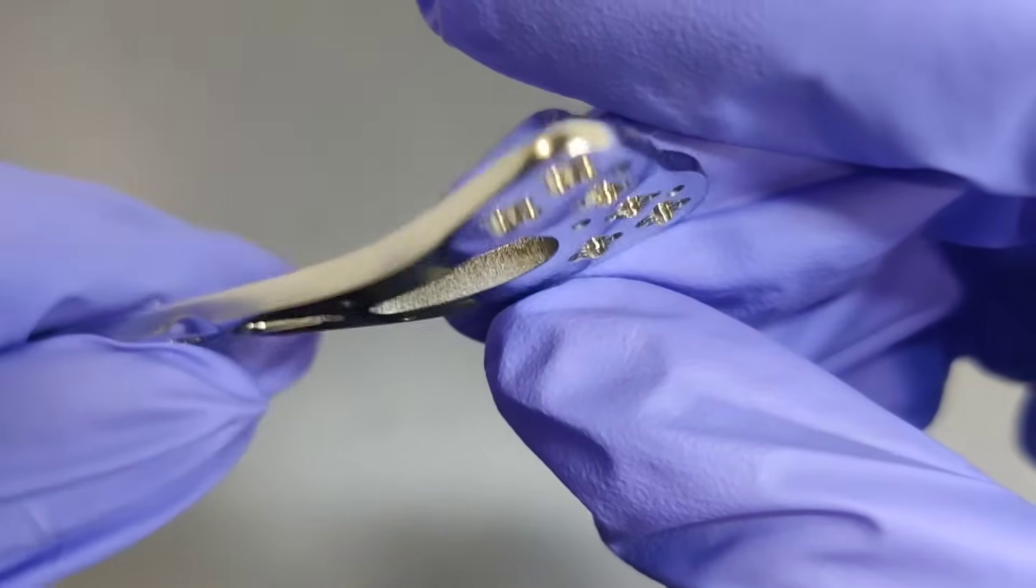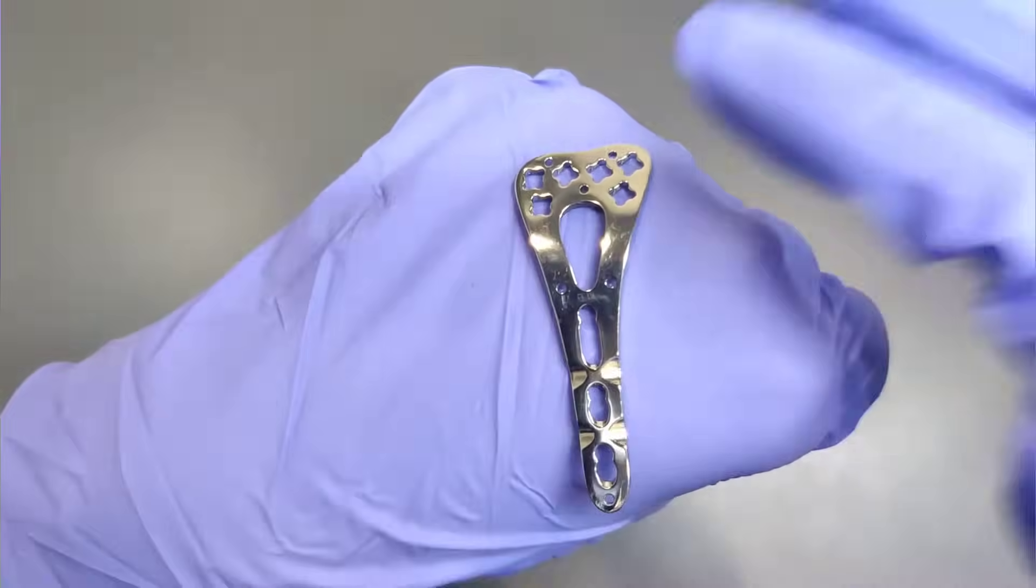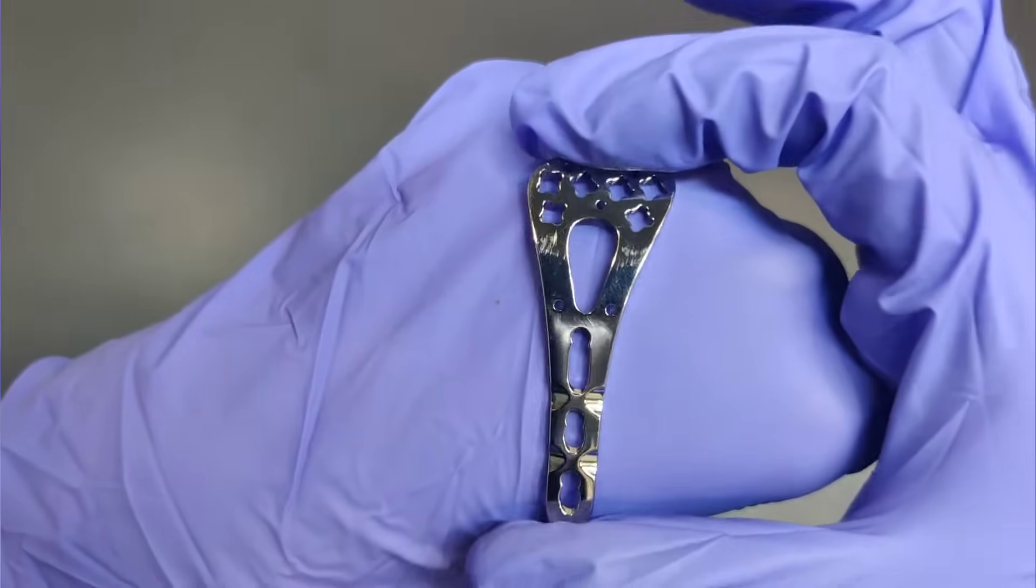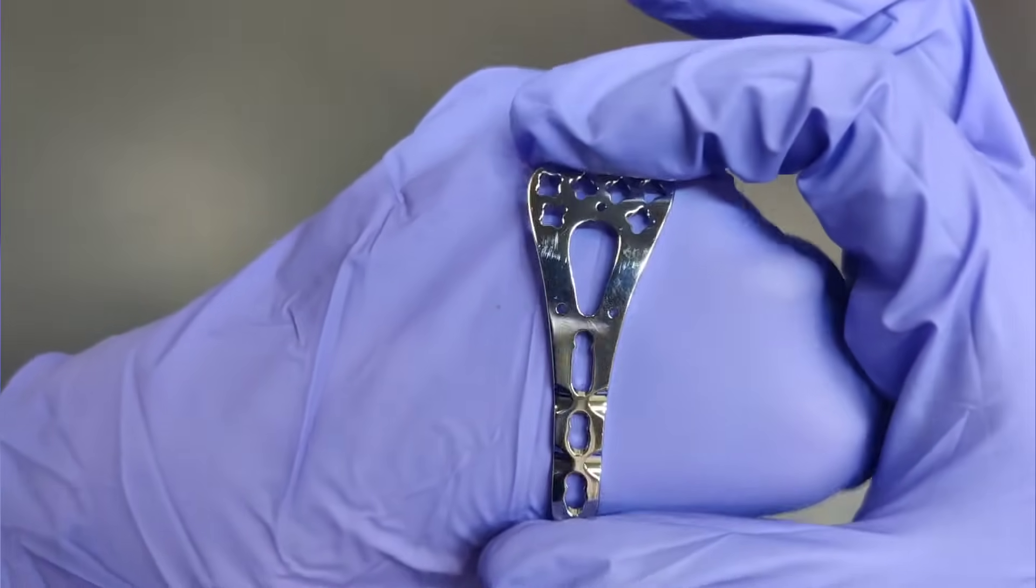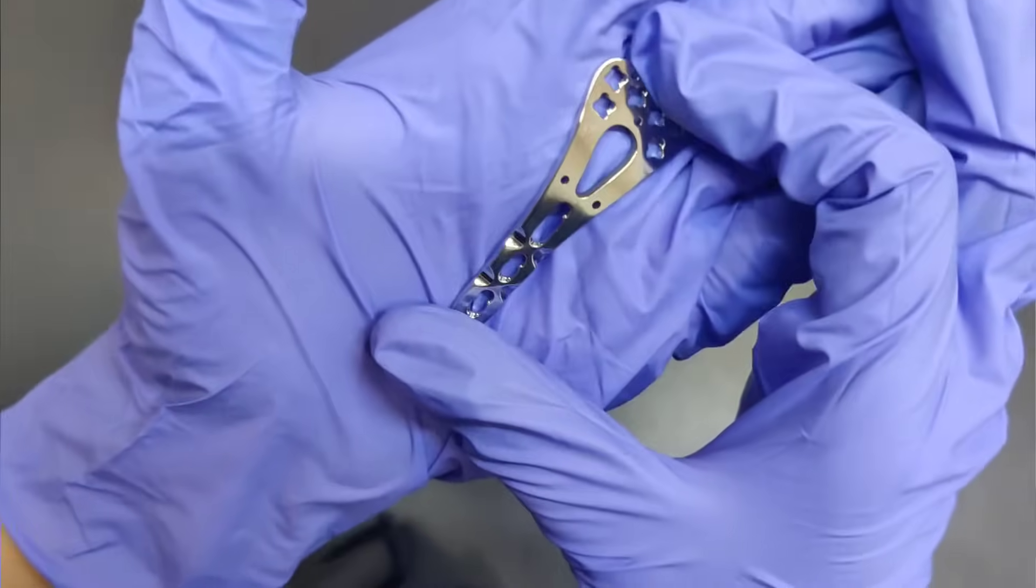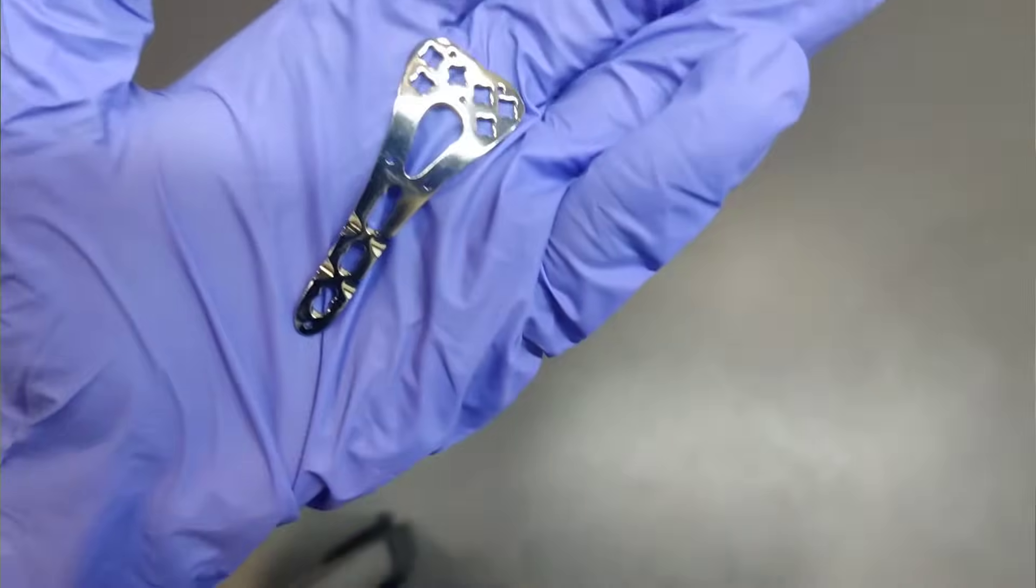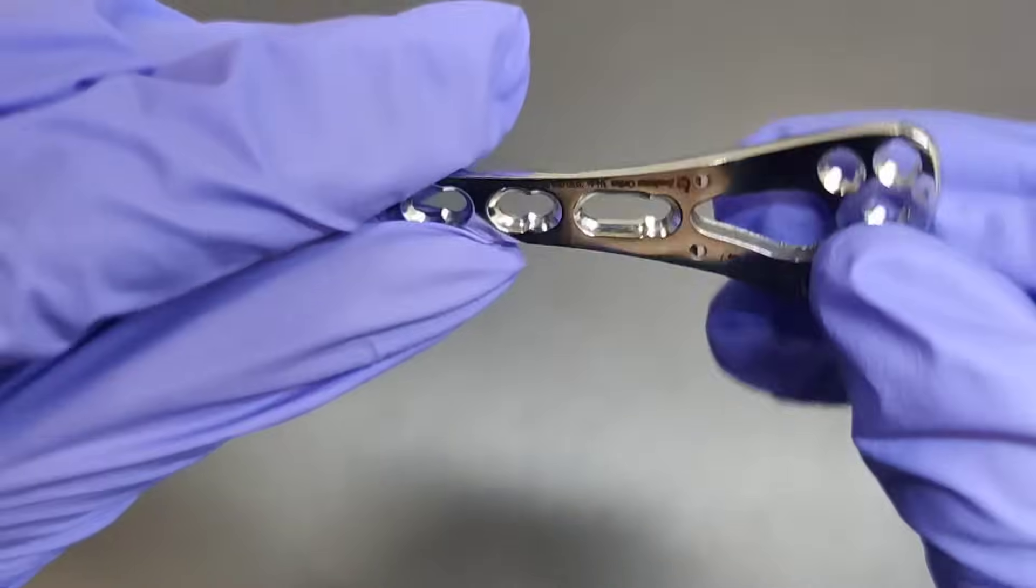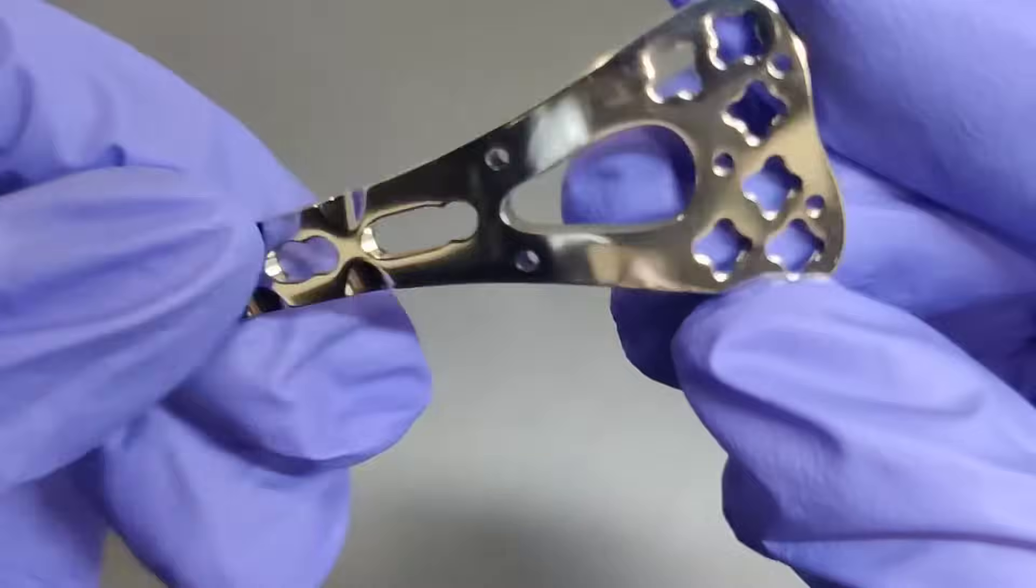Available in various configurations with 2, 3, 4 and 5 holes, the LCP Volar Distal Radius Plate is meticulously crafted using premium materials, boasting both stainless steel and titanium options to meet diverse patient needs.